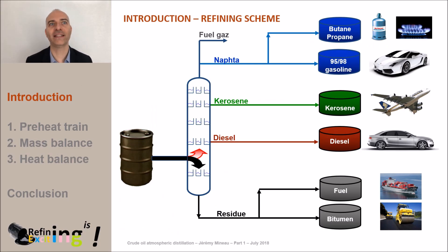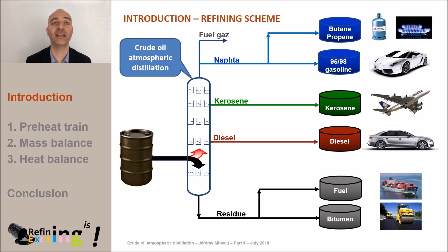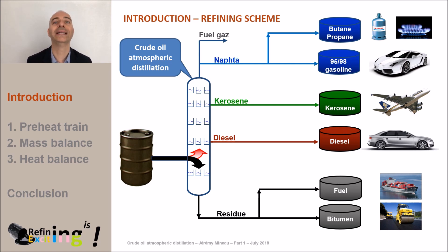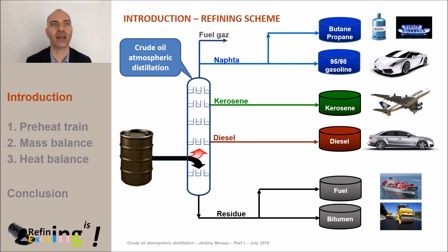The overall refining scheme can be represented with this general scheme. It can be seen from this diagram that the distillation is the starting point of refining. The distillation is a separation process that leads to the production of naphtha, kerosene, diesel and a so-called residue cut. This process requires a lot of energy and we will detail the means to optimize this energy consumption.